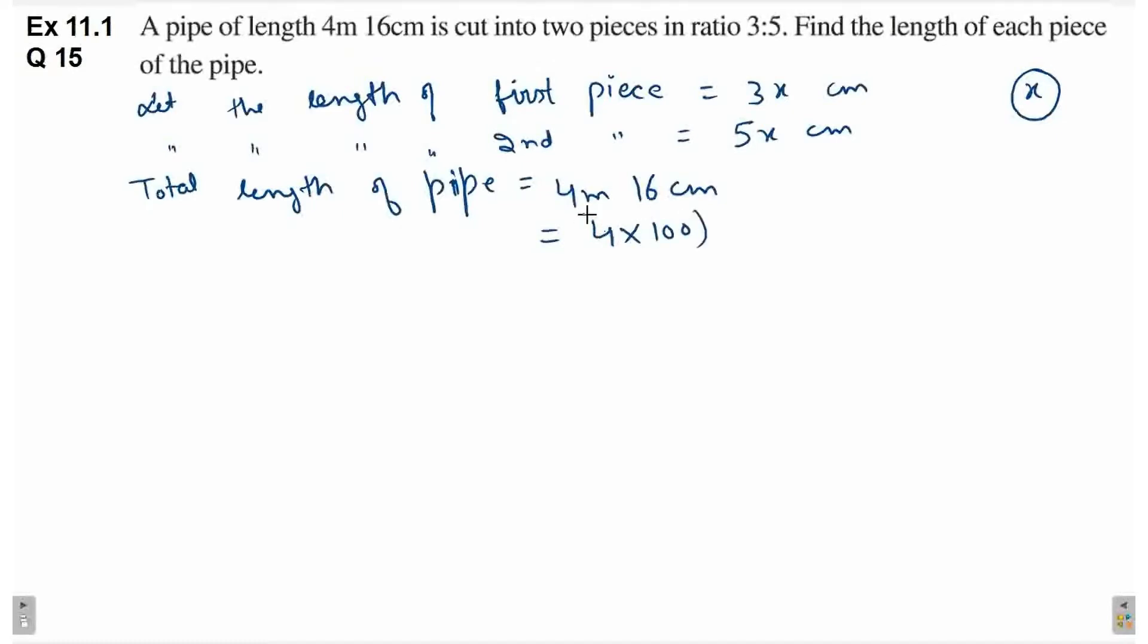So, 4 into 100 plus 16. This is 400 plus 16. This is equal to 416 centimeter.